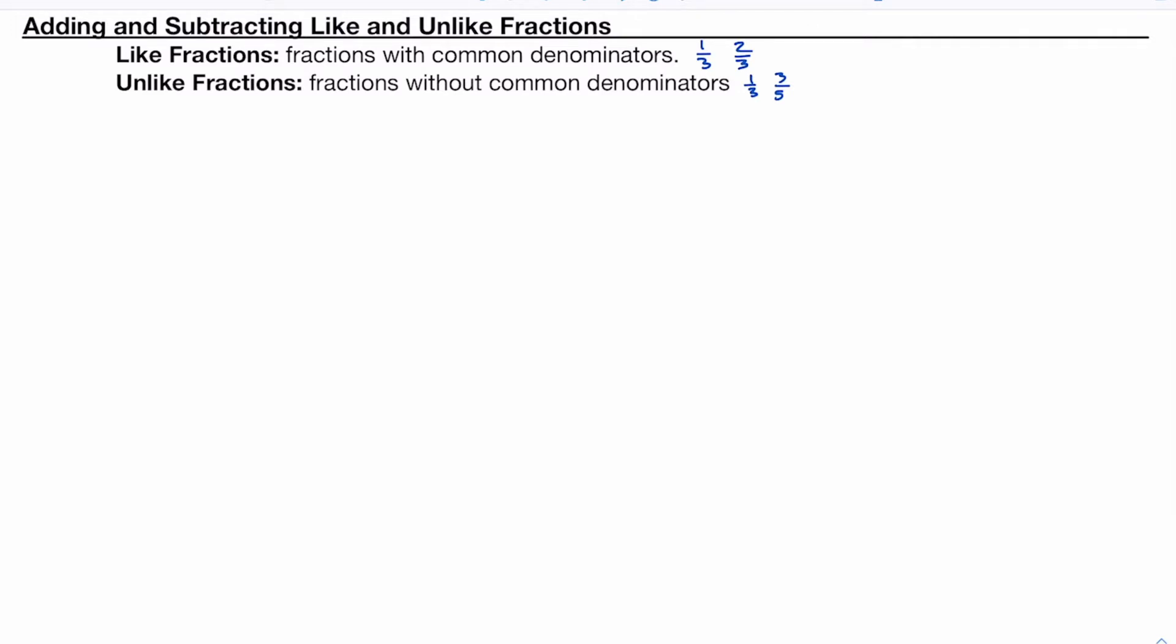So we'll look first at some like fractions. Let's say we had something fairly simple, like one-third plus one-third. We can see we've already got a common denominator there, they are like fractions. Now the most common mistake people make, and I see this all the time, is people would get two-sixths. They just add the numerators, that's the top number, and add the denominator and get six. However, that is not correct.